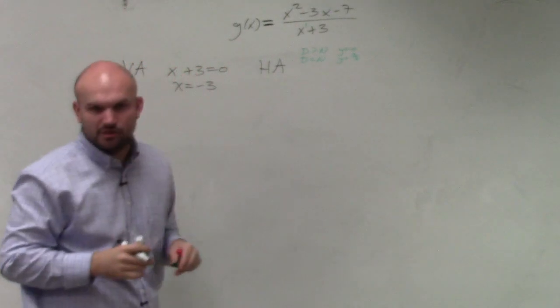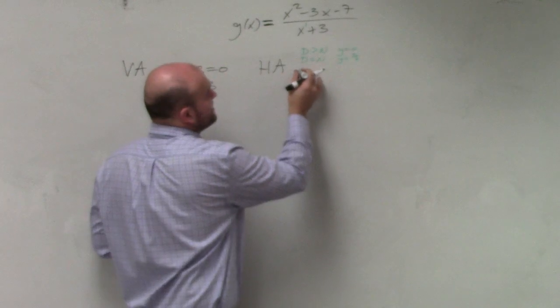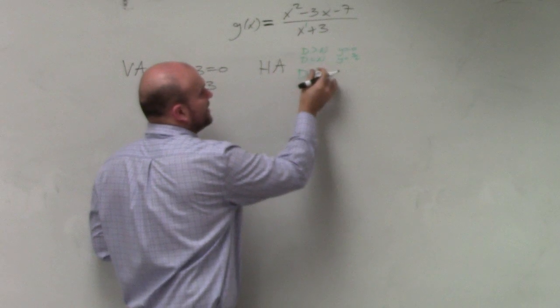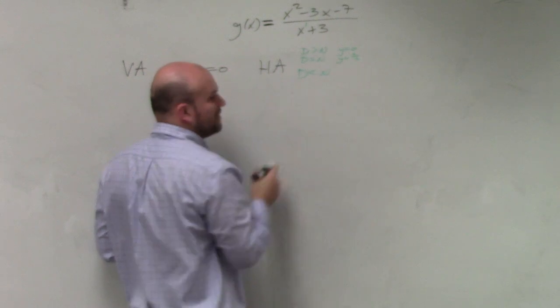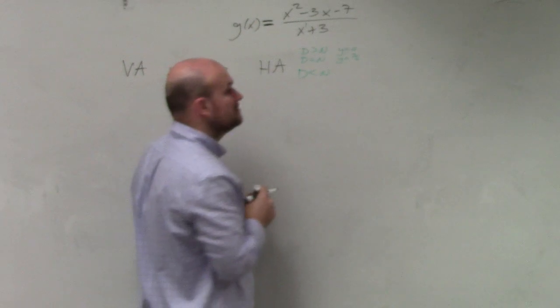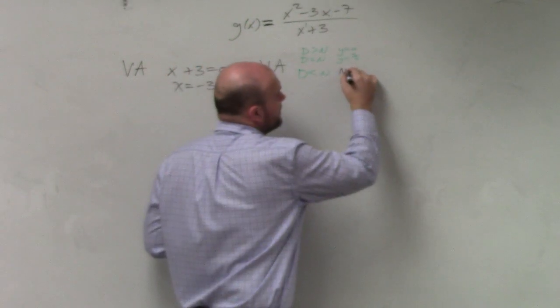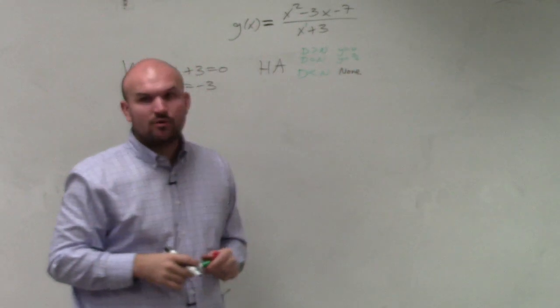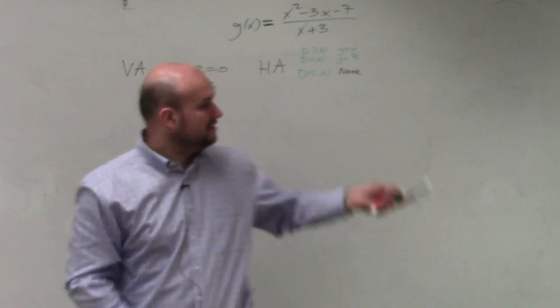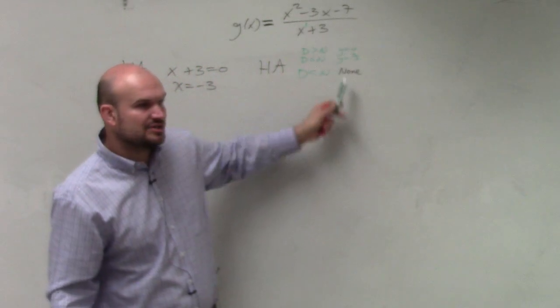Now, we have an example of the degree in the denominator is less than the degree in the numerator. So there is not a horizontal asymptote in this case. But you guys need to make sure you can distinguish all of these.